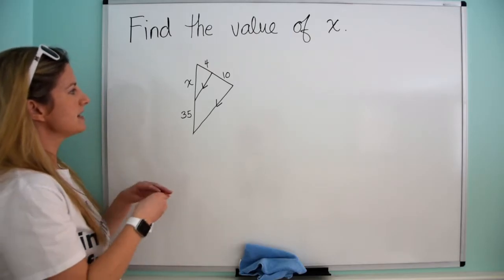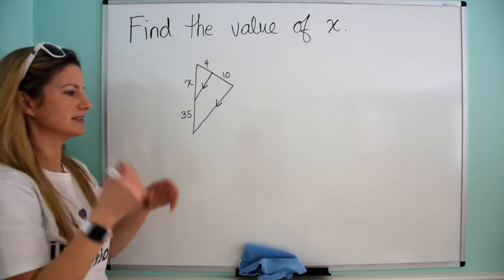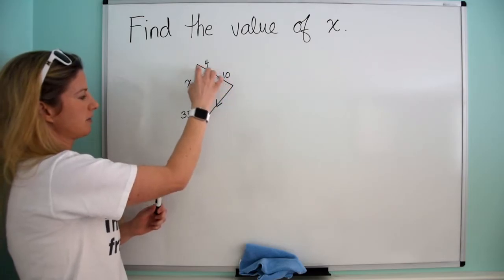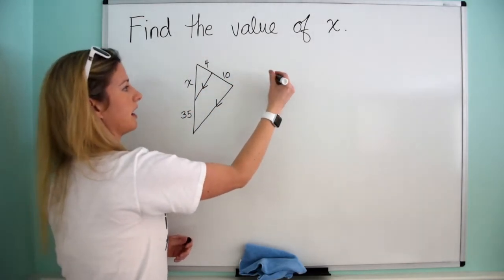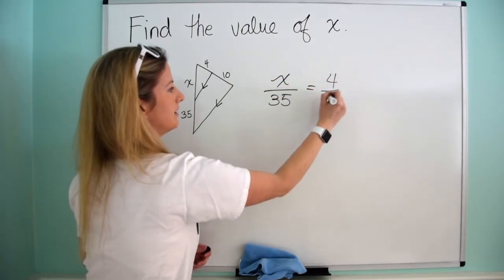And I know what that means is that this is to this as this is to this. I can set up a proportion because I know this segment is dividing these two sides proportionally. So I just go, all right, no sweat, x is to 35 as 4 is to 10.